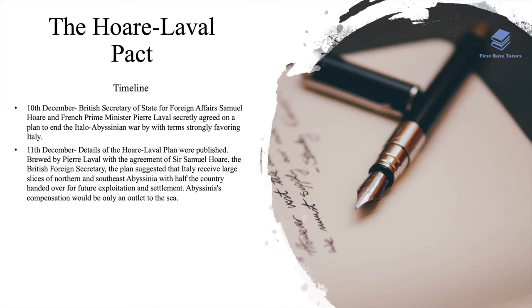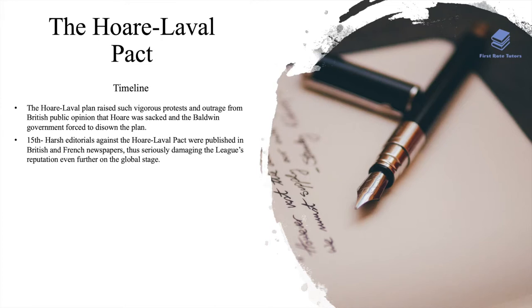On 11 December, details of the Hoare-Laval Plan were published. The plan suggested that Italy receive large slices of northern and southeastern Abyssinia, with half of the country handed over for future exploitation and settlement, while Abyssinia's compensation would be only an outlet to the sea. The plan raised such vigorous protests and outrage from British public opinion once it was leaked that it led Hoare to be sacked and the Baldwin government to disown the plan. Harsh editorials against the Hoare-Laval Pact were published in British and French newspapers, seriously damaging the League's reputation even further on a global stage.